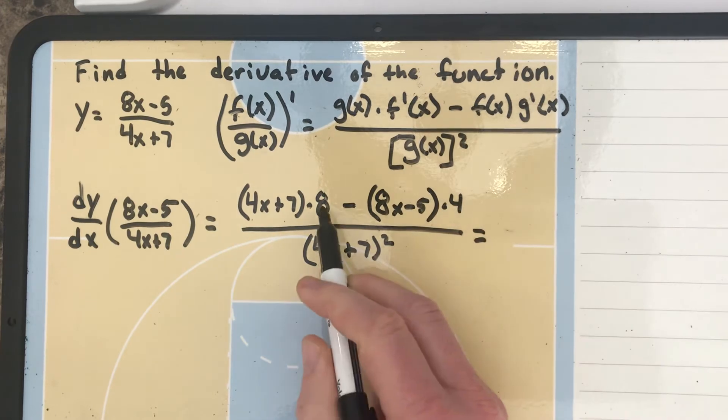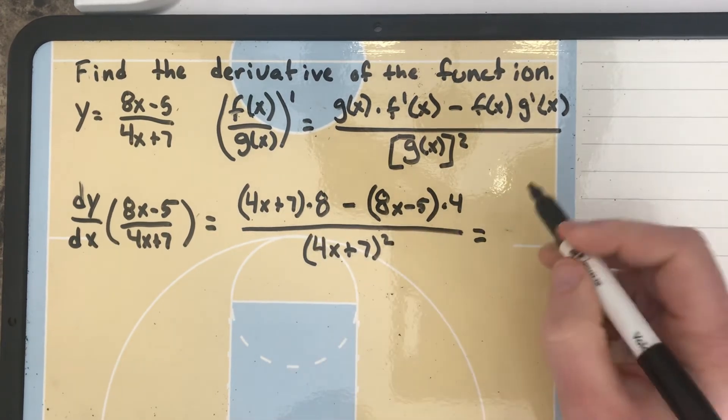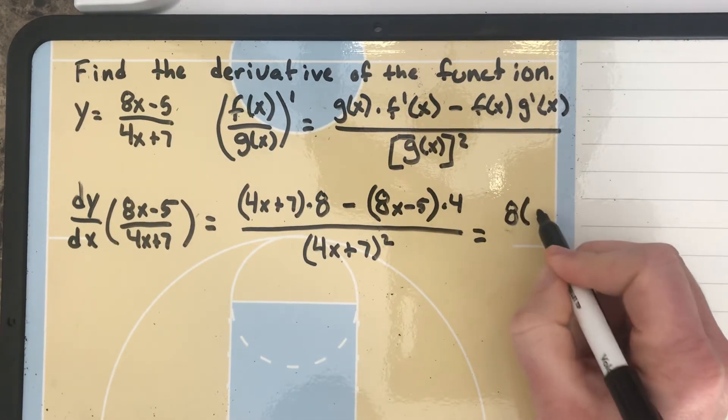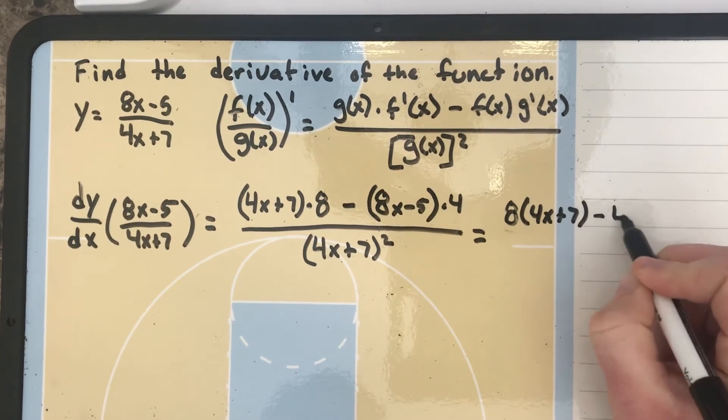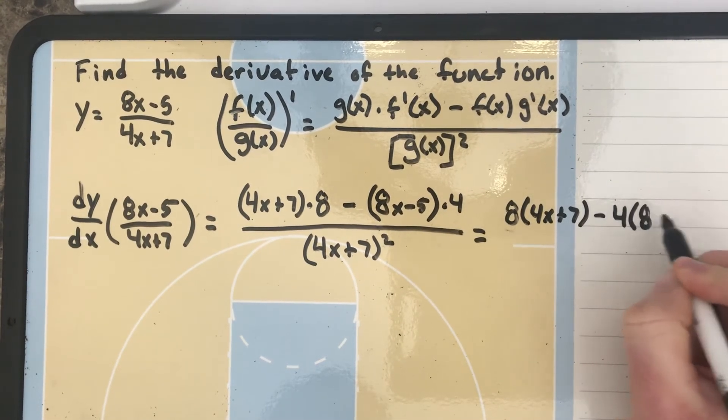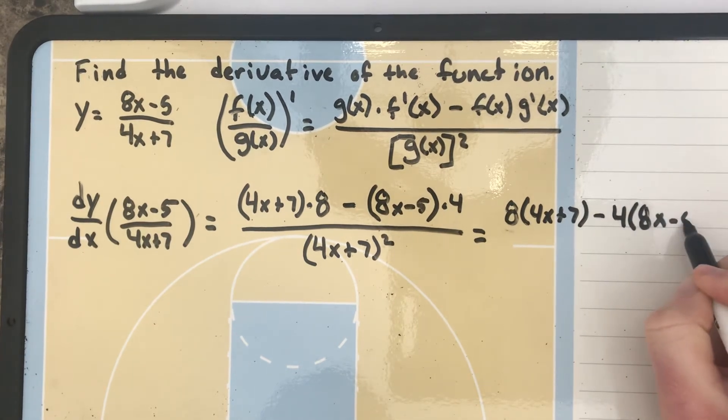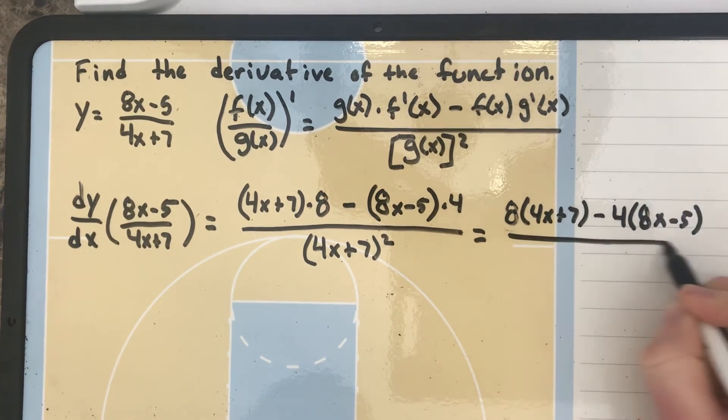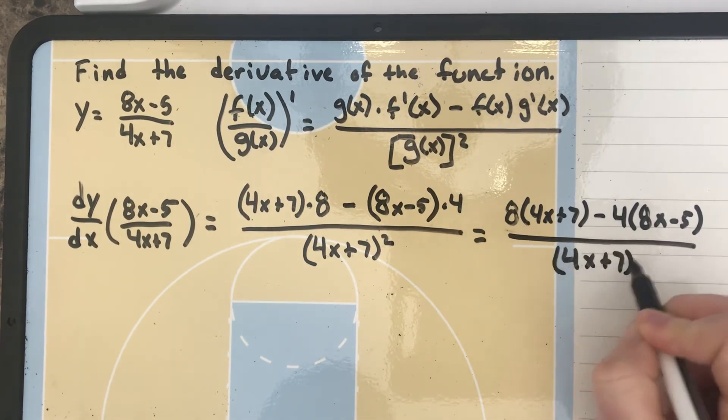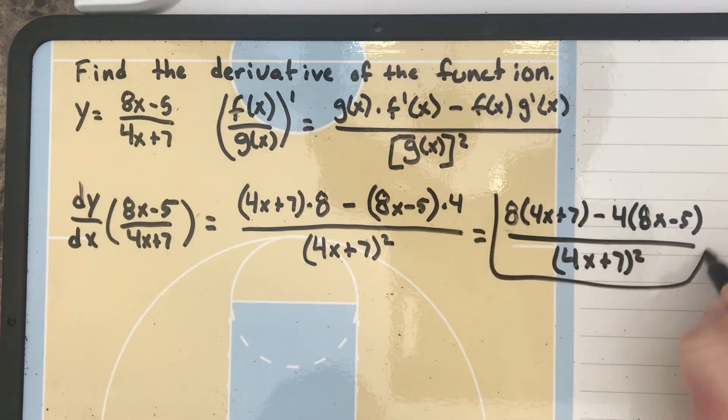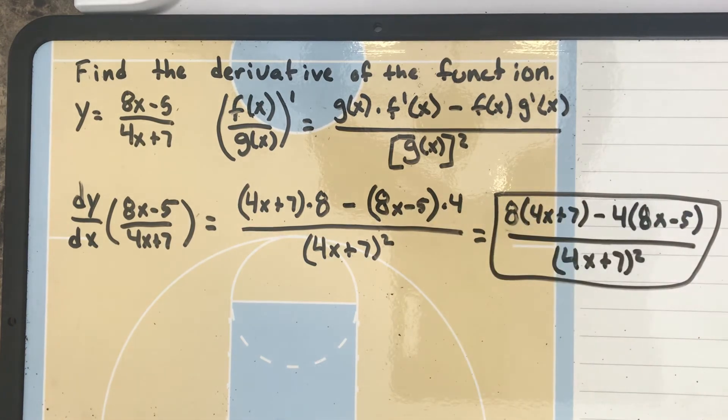Now, I'll probably write that a little bit better. I don't like to write my multiplications at the end. So I'll write 8 times 4x plus 7, minus 4 times 8x minus 5, all over 4x plus 7 squared. And that's the derivative using the quotient rule.